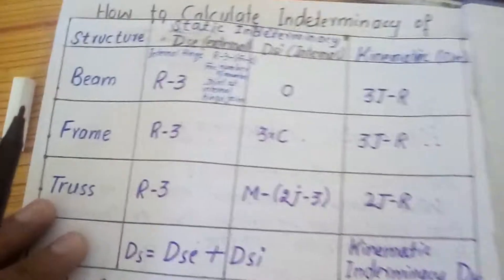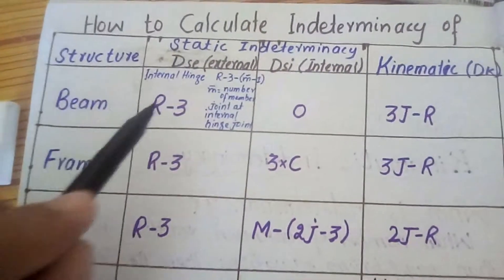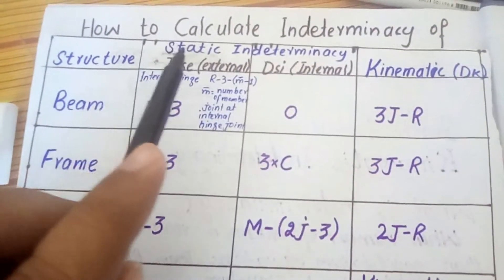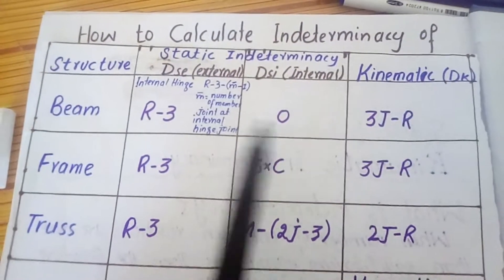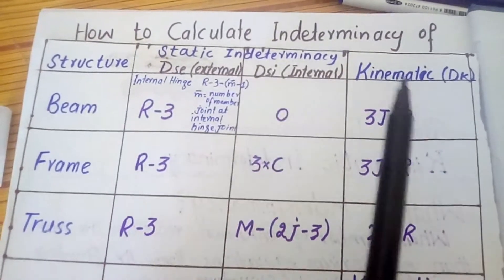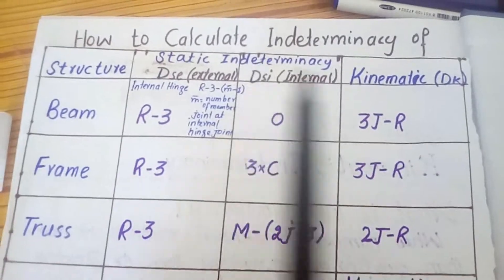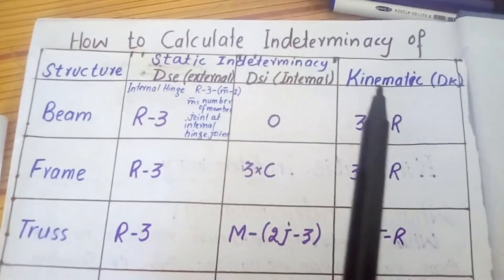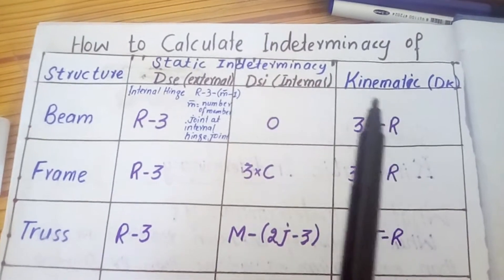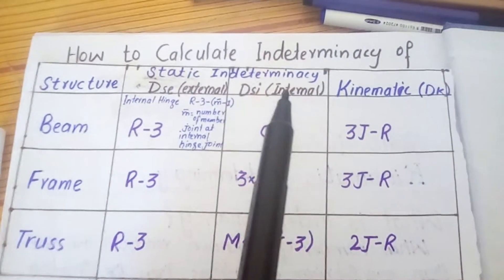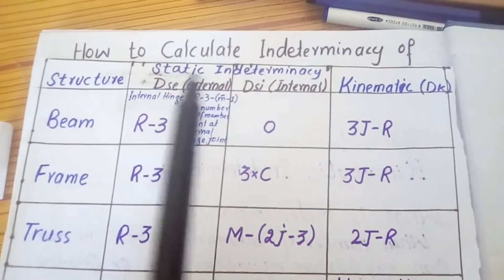Before starting, I will tell you about the formula which is used in this question. As you can see, the formula covers both static indeterminacy and kinematic indeterminacy for a beam. If you do not have a clear idea regarding these two terms, you should watch my first video of this series so that your mind is clear regarding this topic.